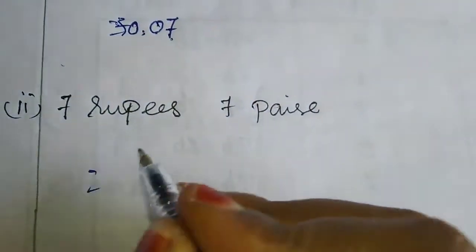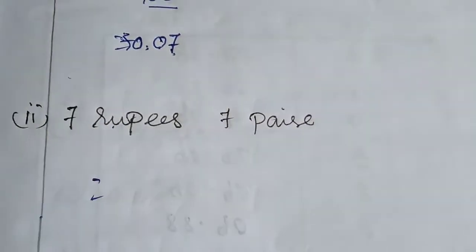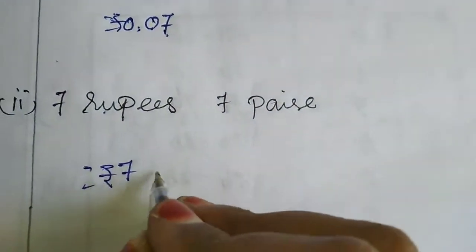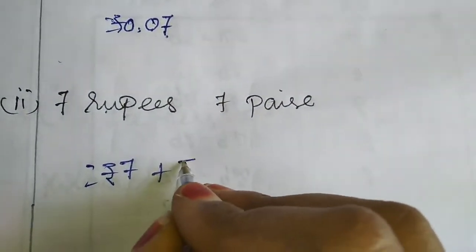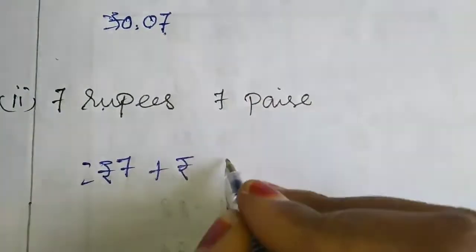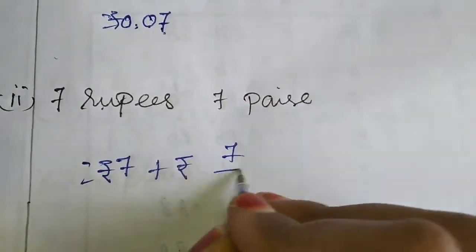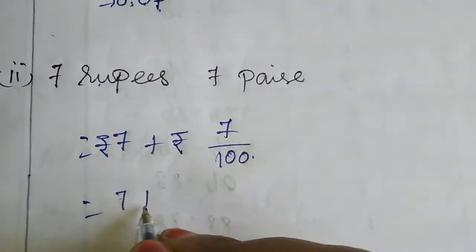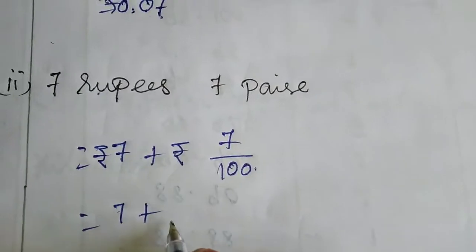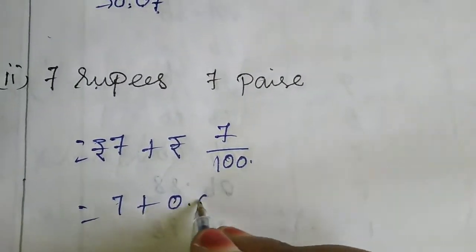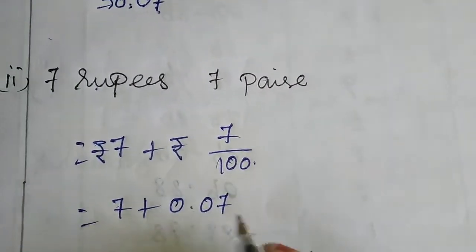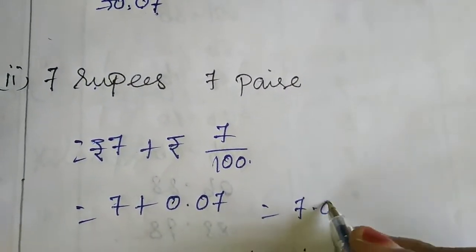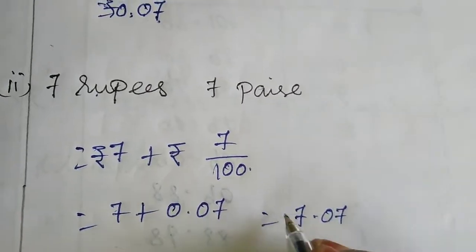Here we already have 7 rupees. So 7 rupees plus 7 paise — 7 plus 7/100, which we write as 0.07. If you add, you will get 7.07 rupees.